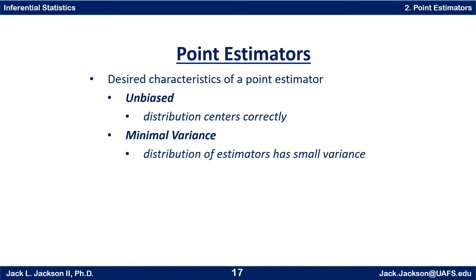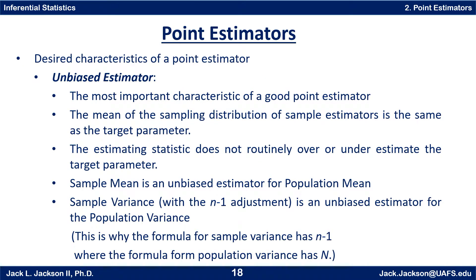When we have a point estimator, we have a couple of characteristics we want for the estimator. First and most importantly it should be unbiased, so that the distribution centers correctly. Next, we would like it to have minimal variance so that the distribution of estimators has a small variance. Let's look a bit more at these two characteristics.